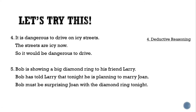And lastly — first premise: Bob is showing a big diamond ring to his friend Larry. Second premise: Bob has told Larry that tonight he is planning to marry Joanne. Conclusion: Bob must be surprising Joanne with the diamond ring tonight. Is it inductive or deductive? It is an example of inductive reasoning, because from these two observations/premises, we assumed that Bob must be surprising Joanne — it is not a fact. Always remember: deductive reasoning goes from general to specific, and inductive goes from specific to general.